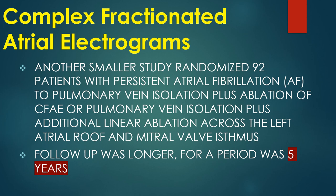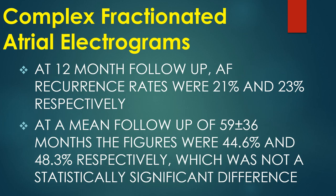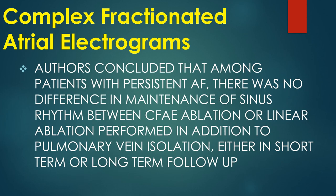Another smaller study randomized 92 patients with persistent AF to pulmonary vein isolation plus CFAE ablation or pulmonary vein isolation plus additional linear ablation across the left atrial roof and mitral valve isthmus, with 5-year follow-up. At 12 months, AF recurrence rates were 21% and 23% respectively. At a mean follow-up of 59±36 months, the figures were 44.6% and 48.3% respectively — not a statistically significant difference. Authors concluded there was no difference in maintenance of sinus rhythm between CFAE ablation or linear ablation added to PVI, in either short or long-term follow-up.